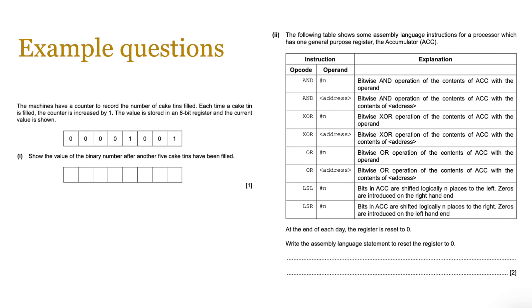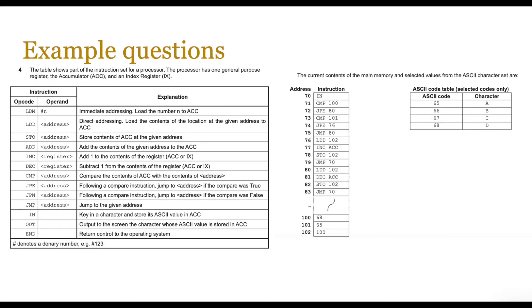Now's the time for you to actually do some practice. Pause the video and have a go at some example questions which build on your knowledge of today's and previous sessions related to computer architecture. This particular question has a nice and easy start — you store the value of a binary number after five cake tins have been filled, add that to the number at the top, and write it down in binary. The second part is when you start delving into assembly language — you're given instructions, opcodes, and operands, some explanation, and a context, and you're expected to write an assembly language statement to reset the register to zero.